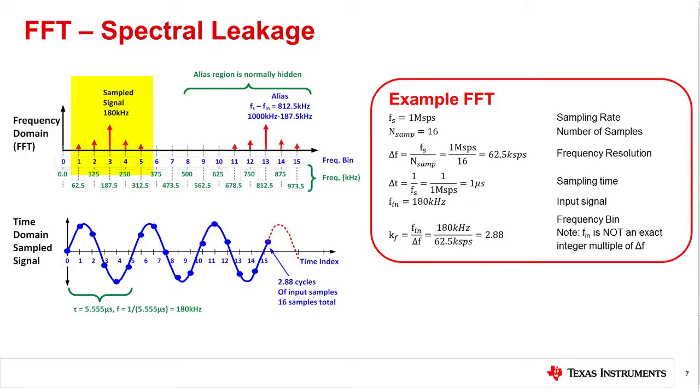This results in smearing the frequency components into multiple bins. The tallest frequency component is located at bin 3, and other frequency components show up in adjacent bins. This smearing of the frequency domain signal is called spectral leakage. Spectral leakage is problematic as it is indistinguishable from noise near the signal.